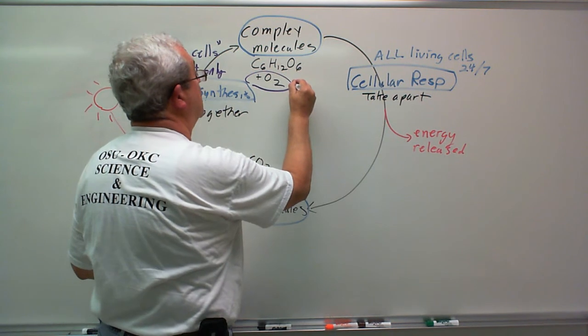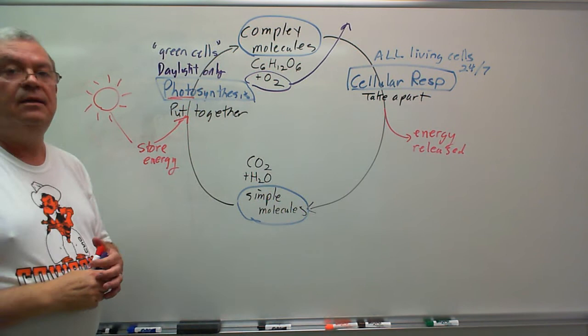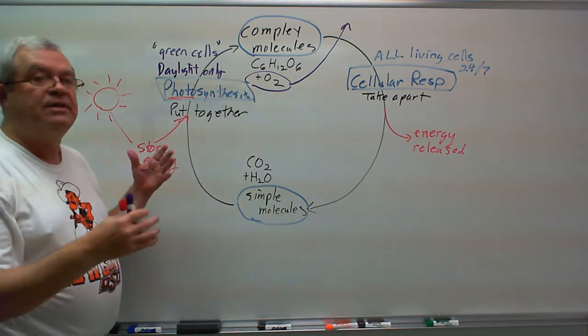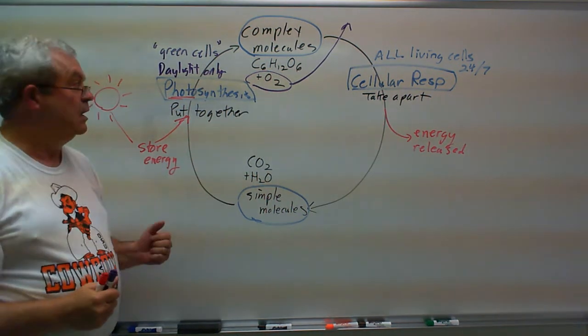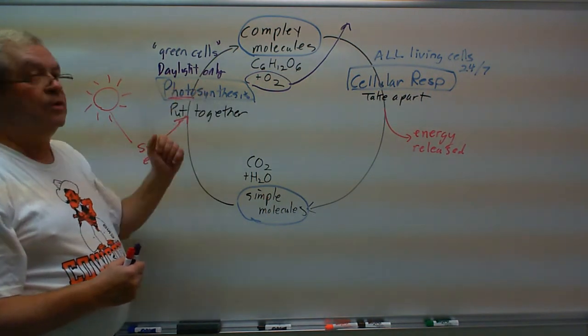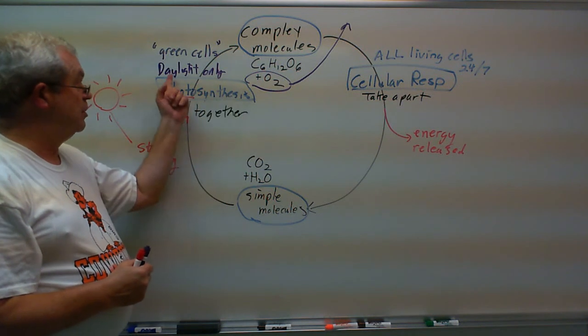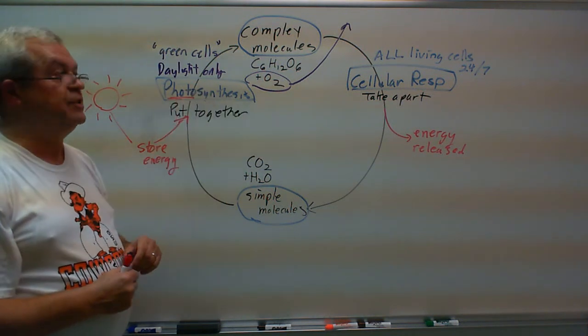But how can it? What do you mean, how can it? What are you talking about? Let's take a plant. A plant does photosynthesis when? Daylight only. Just the green cells in the plant. So it's just producing oxygen during the daylight, and only the green cells are producing oxygen.